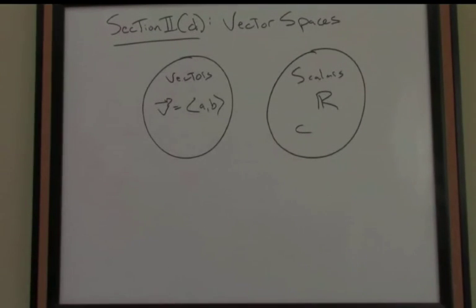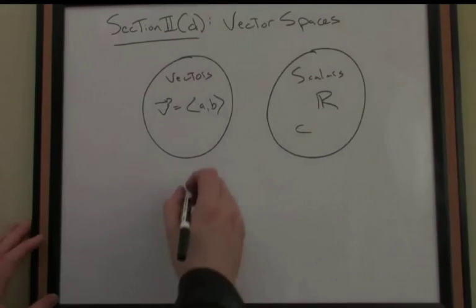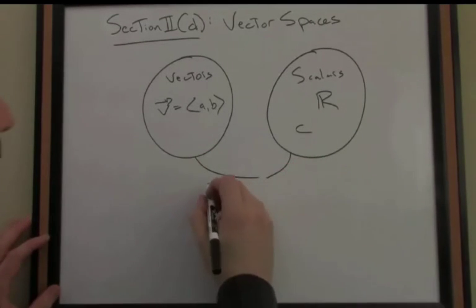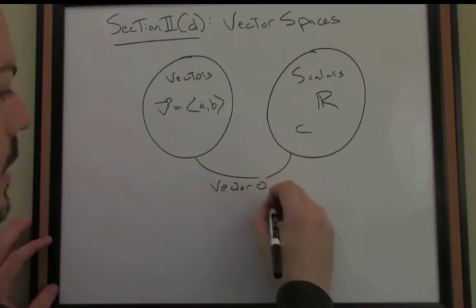What we'd like to do in forming a vector space is connect, via our operations that we've already looked at before, these two sets of things. We've defined some vector operations.